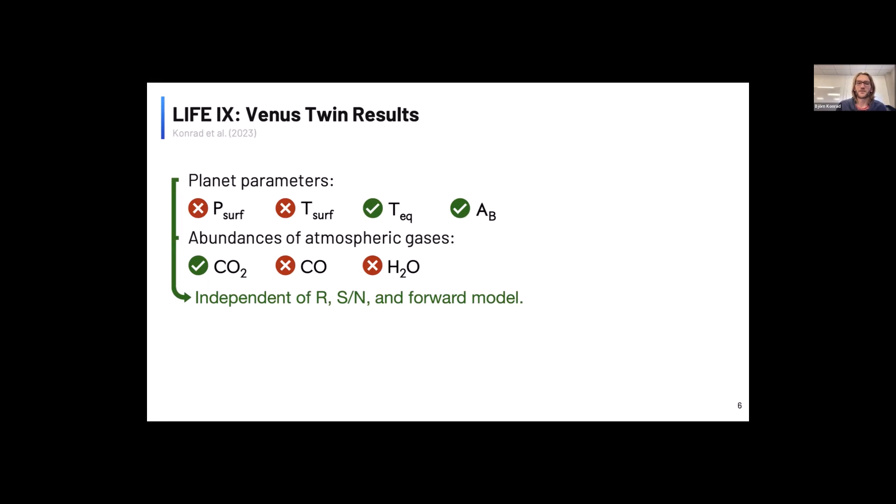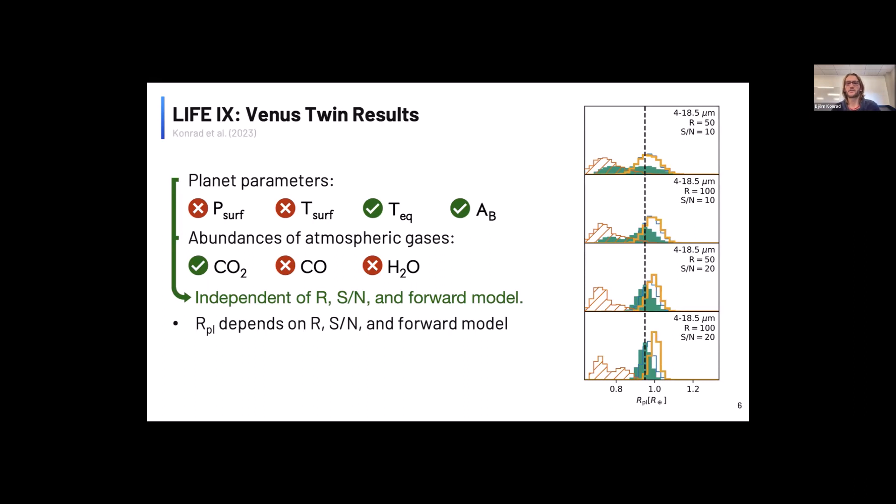So you might ask yourself, are there things that depend on the model? And one thing we find that sort of depends on the model is, for example, the retrieved planetary radius.